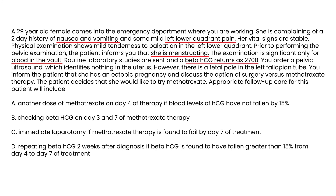The pelvic exam is significant only for blood in the vault. Routine labs are sent, and the beta-hCG returns as 2,700. A pelvic ultrasound is ordered, which identifies nothing in the uterus but shows a fetal pole in the left fallopian tube. The patient is informed she has an ectopic pregnancy and, after discussing surgery versus methotrexate, decides she would like to try methotrexate.